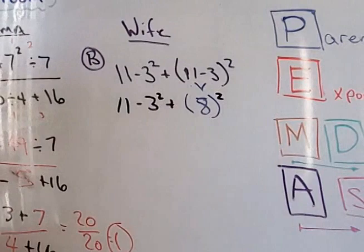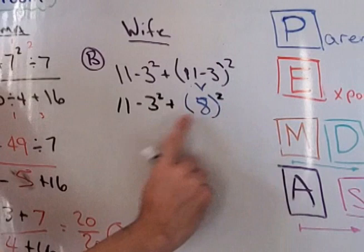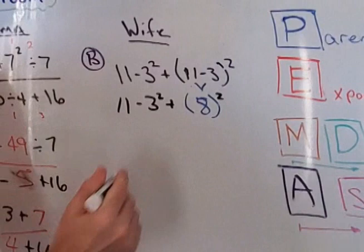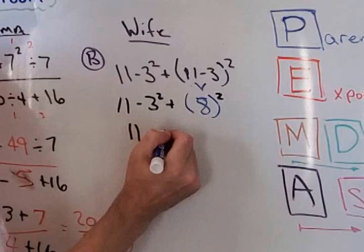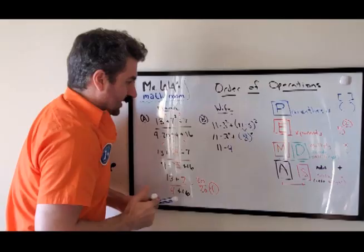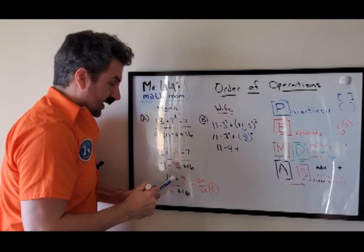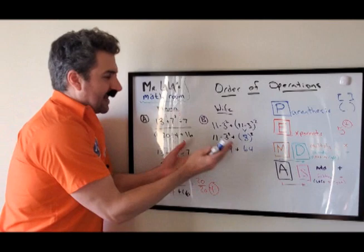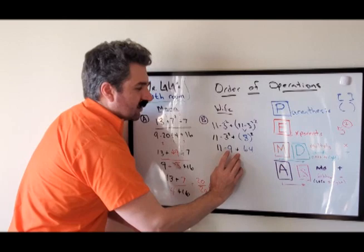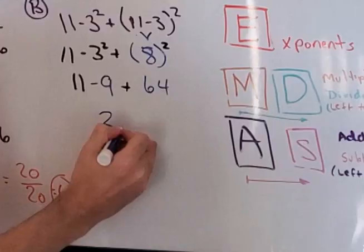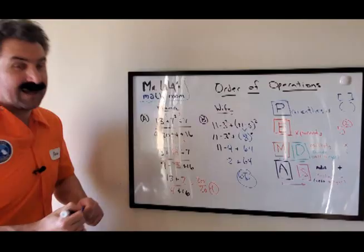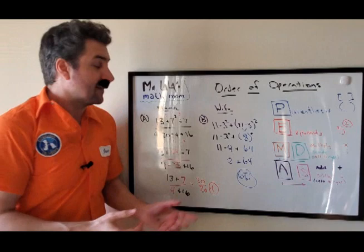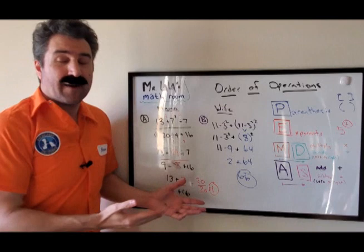11 minus 3 squared plus 11 minus 3 with the square. What do we do first? First we have to P. 11 minus 3, we P right there, make that an 8. Now we got exponent, we go to the second button. 11 minus 3 squared, what is 3 times 3? That's a 9. And then we add 8 to the second power. 8 times 8 is going to be a 64. We don't do addition first, we go left to right. 11 minus 9 is going to be 2 plus 64, she's going to be 66. Ironically that is how I feel when I'm around my wife.